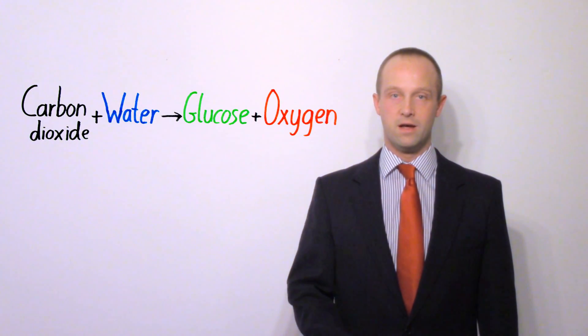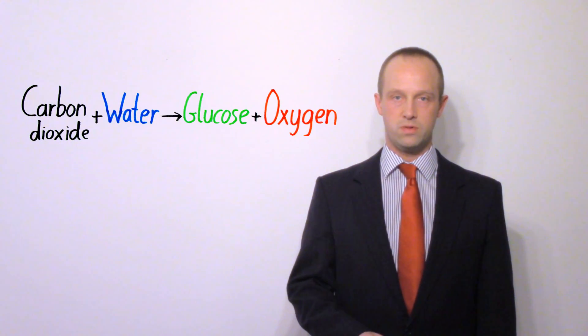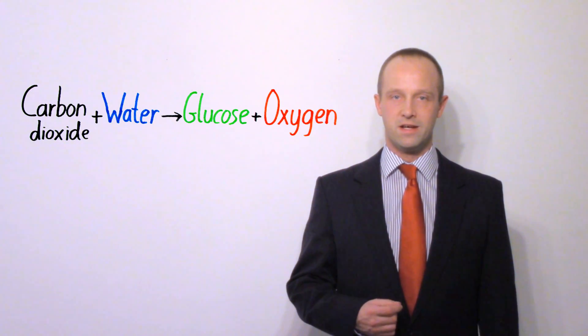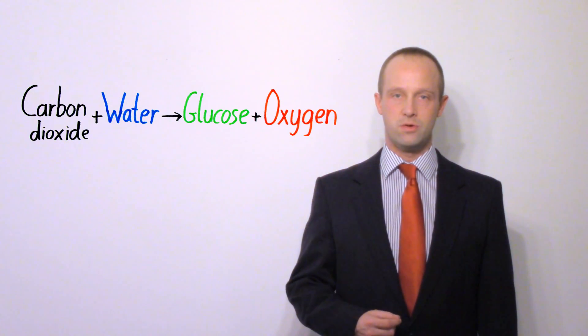Photosynthesis is a process by which plants store energy from light so that they can use it later on for building things or for growth. The equation: carbon dioxide from the air and water taken in through the plant's roots use light energy to create glucose, and as a byproduct produce oxygen.